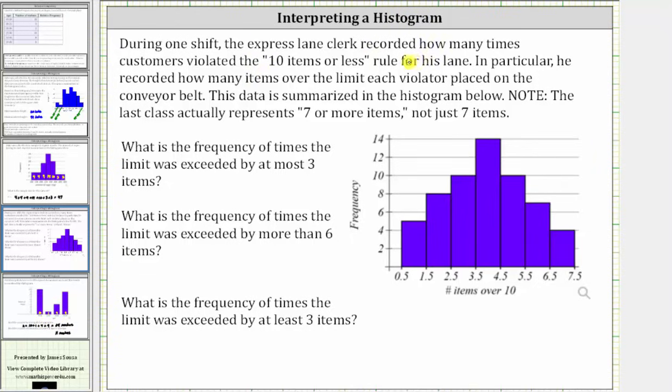During one shift, the express lane clerk recorded how many times customers violated the 10 items or less rule for his lane. In particular, he recorded how many items over the limit each violator placed on the conveyor belt. This data is summarized in the histogram below. Note the last class actually represents seven or more items, not just seven items.